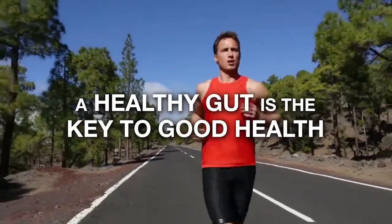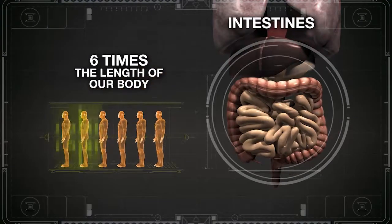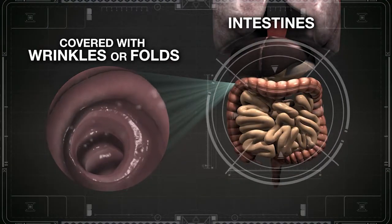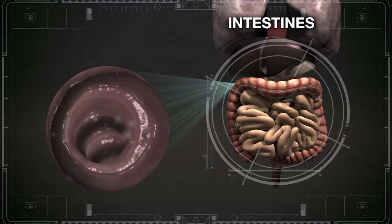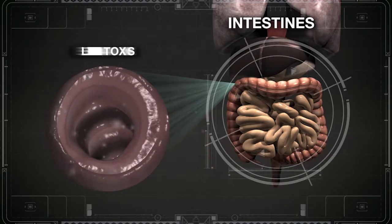A healthy gut is the key to good health. Our intestines are six times the length of our body. Its inner wall is covered with wrinkles or folds, and each fold is about half an inch long. Apart from digestion and absorption, our intestines also play an important role in eliminating toxins.